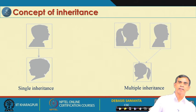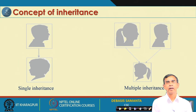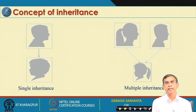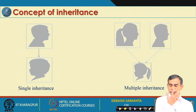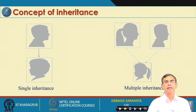Inheritance is a very common concept — it is a biological term. Inheritance means children inherit from their parents. Single inheritance means an entity inherits from only one entity, and multiple inheritance means one entity inherits from multiple entities. Inheritance can also be hierarchical, with multiple levels.